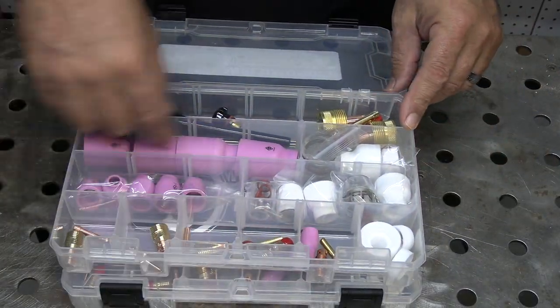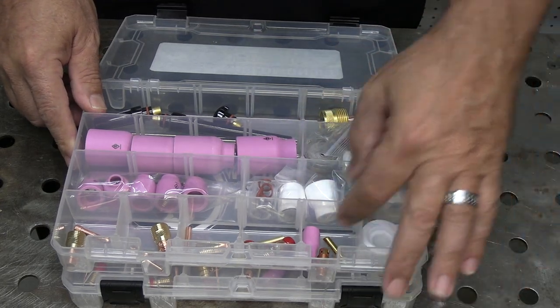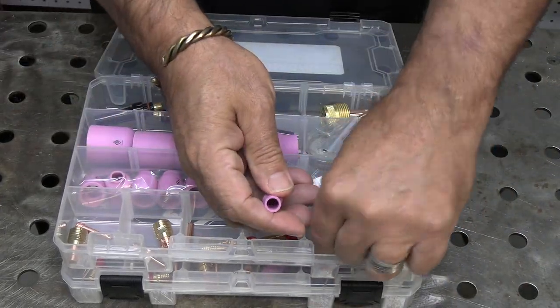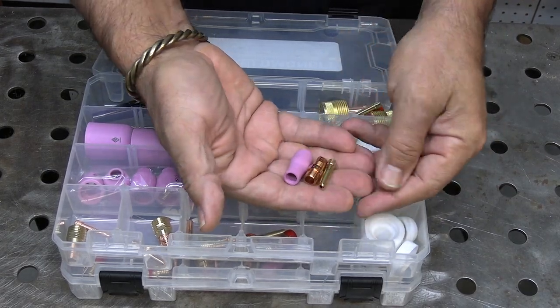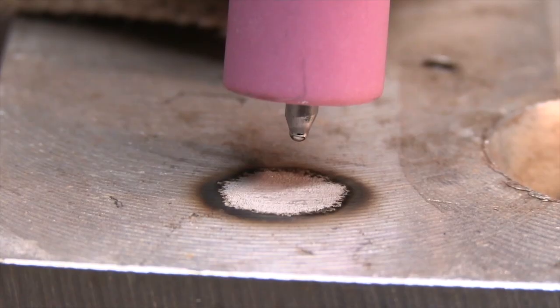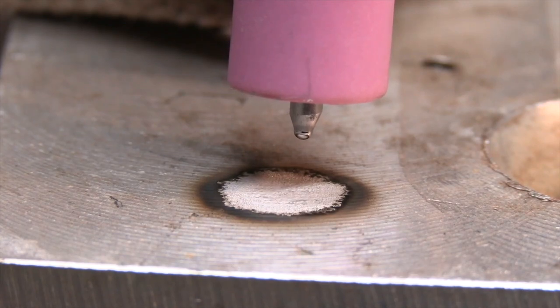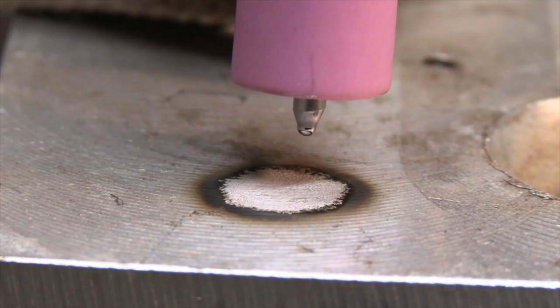Another cup kit that's added in here is the number five cup for aluminum. It's a standard collet body with no gas lens. A lot of people prefer this setup strictly for aluminum. I like to taper my electrode a little bit and then ball it a little bit for a whole lot of aluminum work that I do.